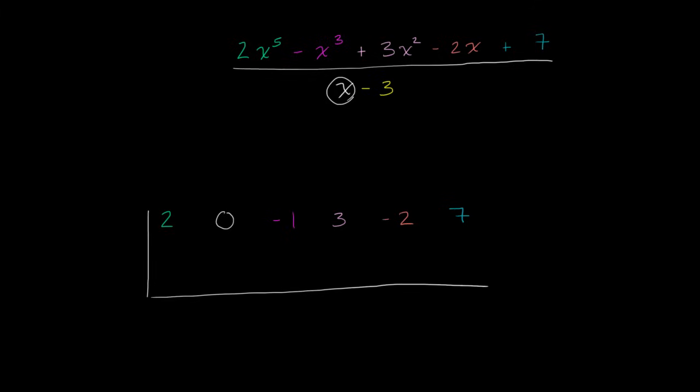In this case, we have x minus 3. So we have the negative 3 here. We have this negative 3. And the process we show, there's other ways of doing it, is you take the negative of this. So the negative of negative 3 is positive 3. And now we're ready to perform our synthetic division.